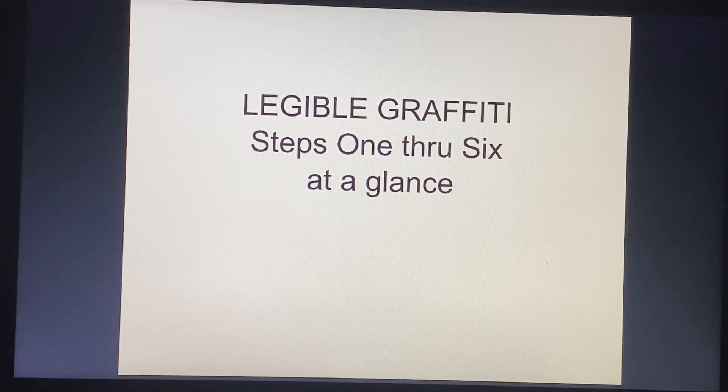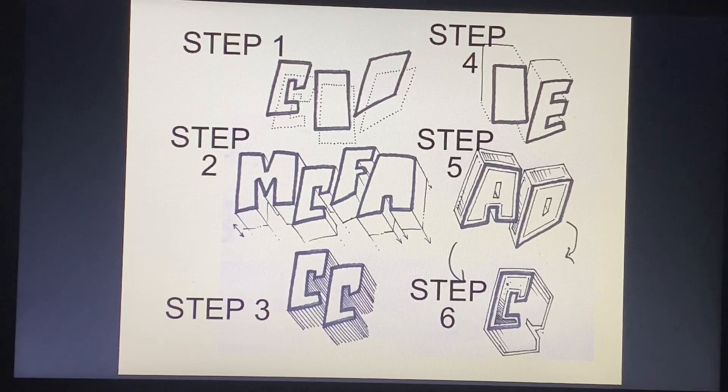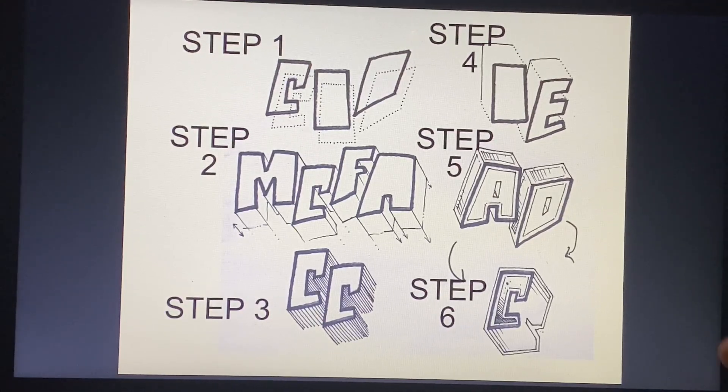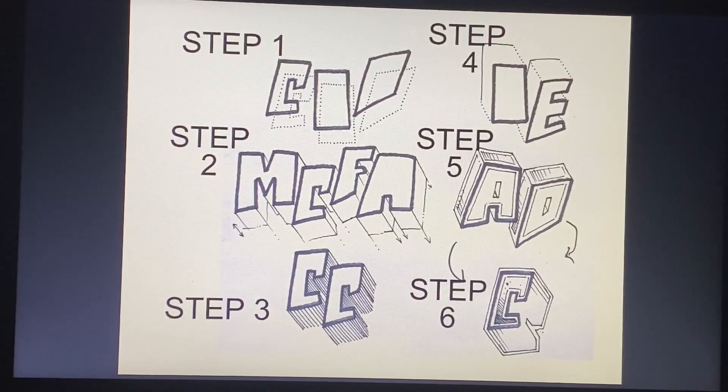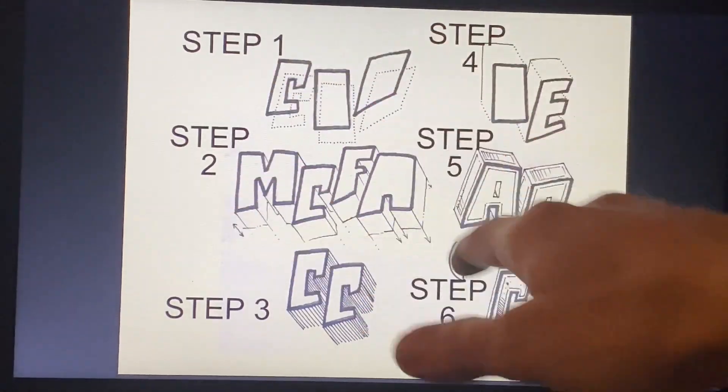Legible Graffiti steps 1 through 6 at a glance. Step 1, you're going to copy your original design. If the dots are the original design, the solid lines are going to represent what you've traced in order to make these blocks. You're going to use the original design throughout this process.